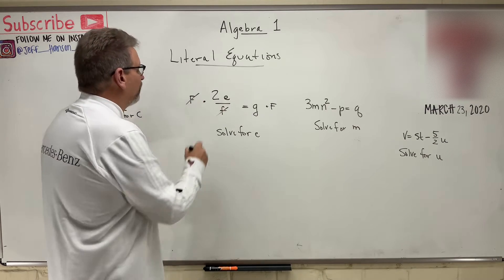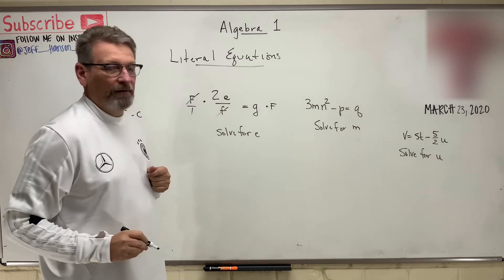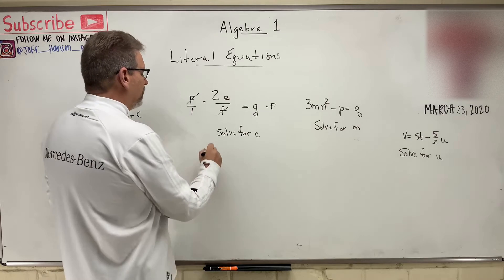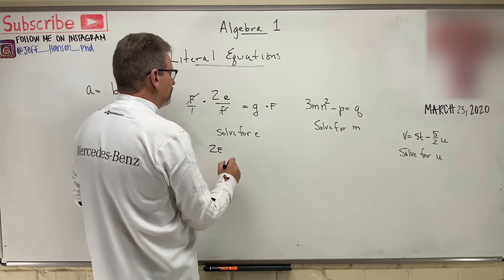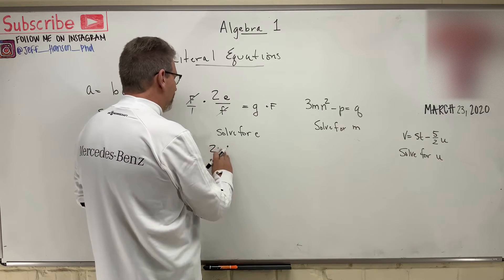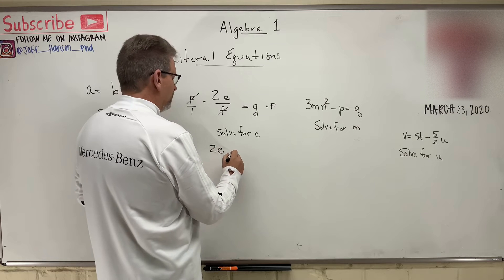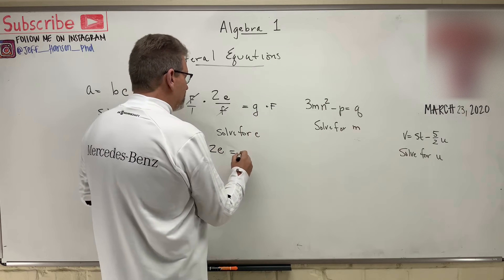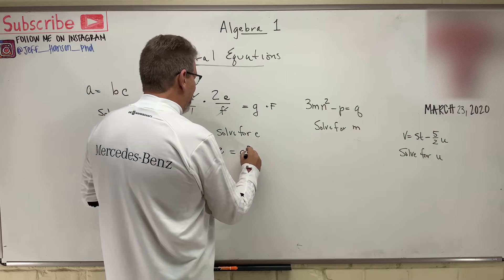And what happens? Those two F's cancel out. Because remember, F is like F over 1, right? So, that leads me with 2E. Oh, you wrote your E different. Let's write it the same way. E is equal to G times F. Girlfriend, okay?